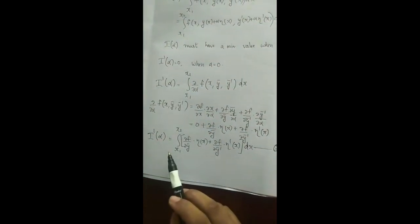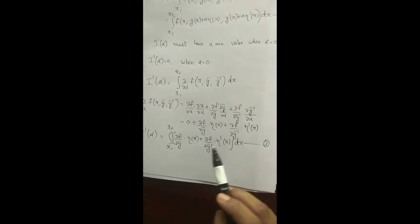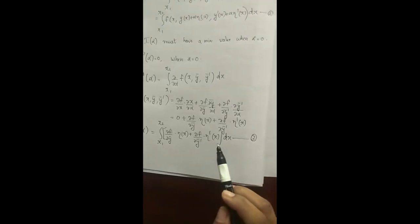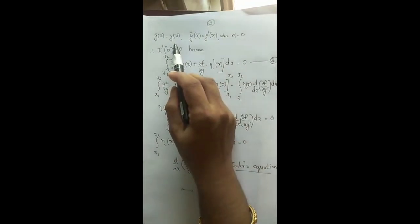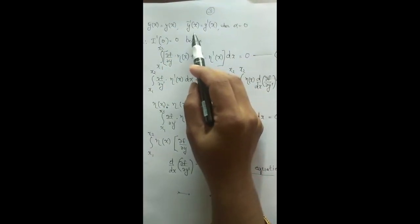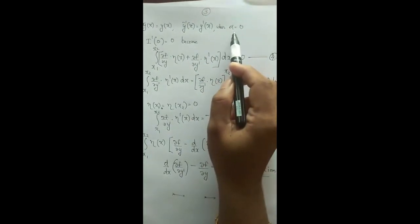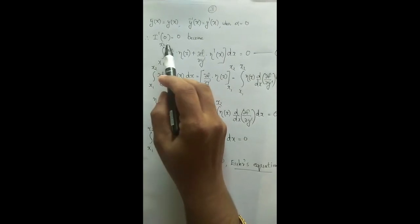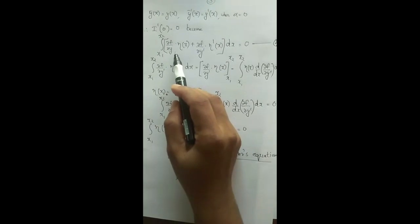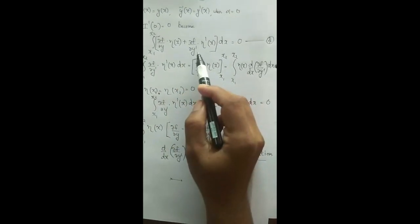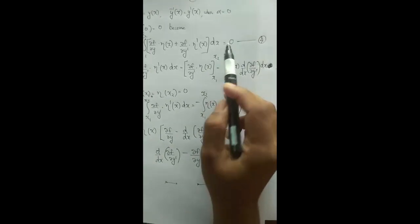Thus I'(α) becomes integral from x1 to x2 of [∂f/∂ȳ · η(x) + ∂f/∂ȳ' · η'(x)] dx. As ȳ(x) = y(x) and ȳ'(x) = y'(x) when α = 0, the condition I'(0) = 0 becomes integral from x1 to x2 of [∂f/∂y · η(x) + ∂f/∂y' · η'(x)] dx = 0.